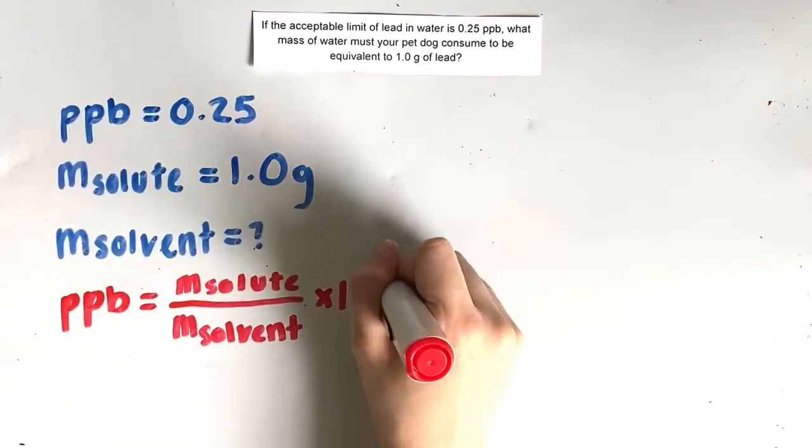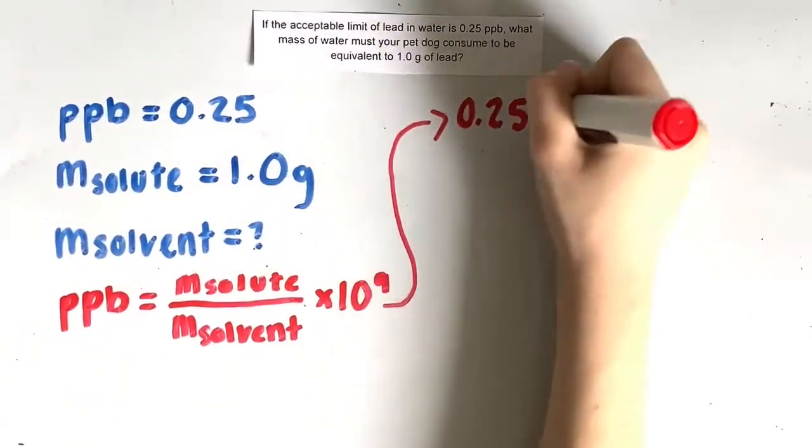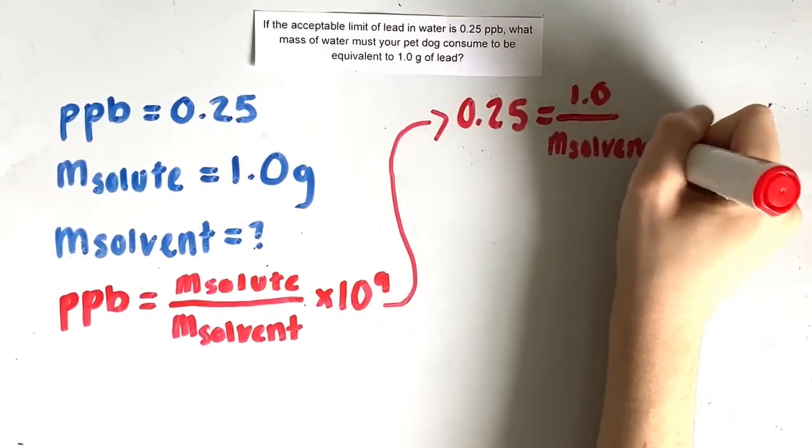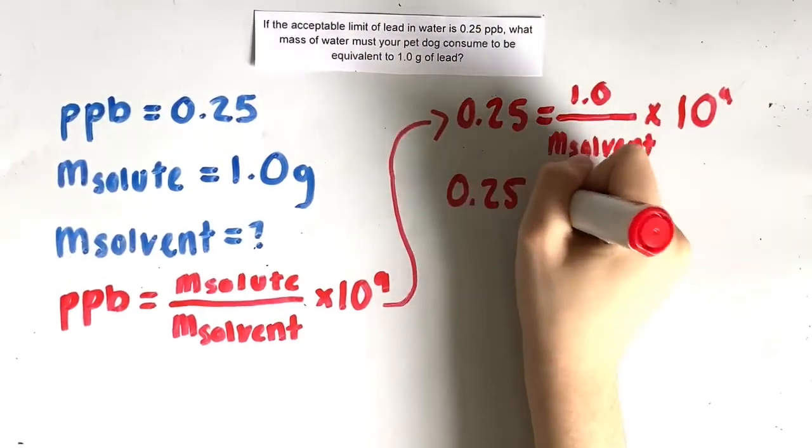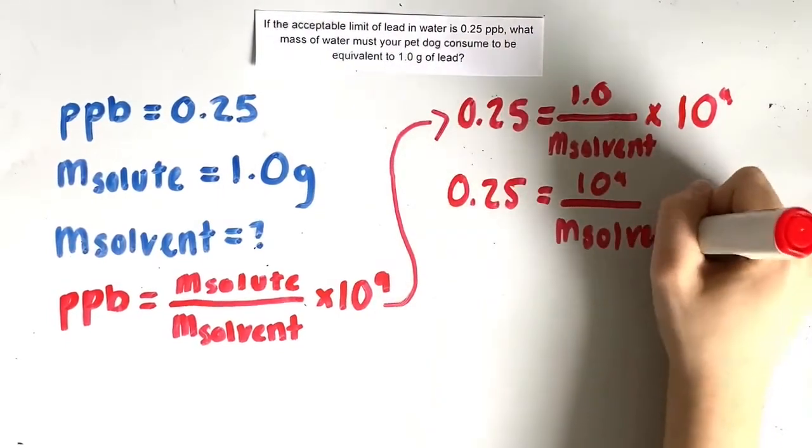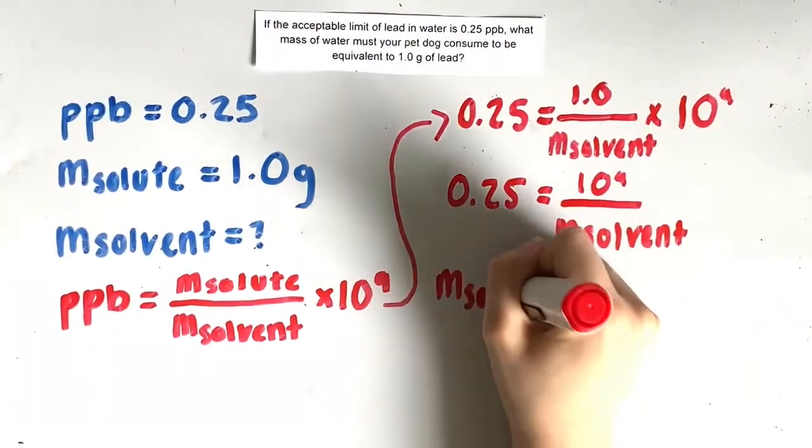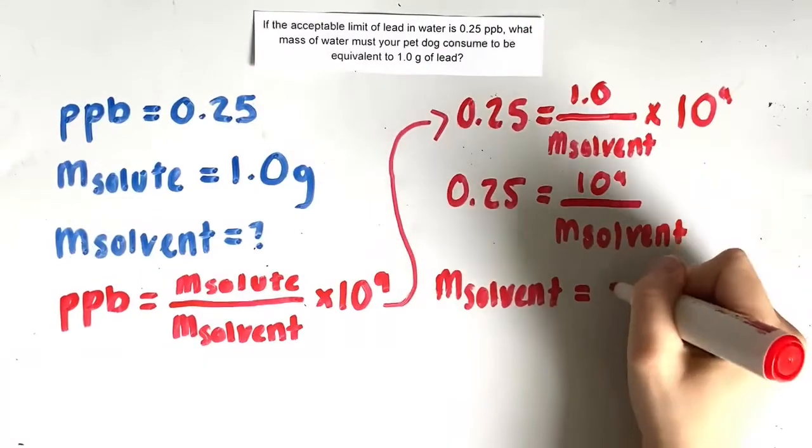Firstly, we will write out our equation. Secondly, we can plug in all our given values. Thirdly, we can simplify the equation by multiplying 1 times 10 to the power of 9. Fourthly, we need to isolate the solvent, and we can do that by cross-multiplying.